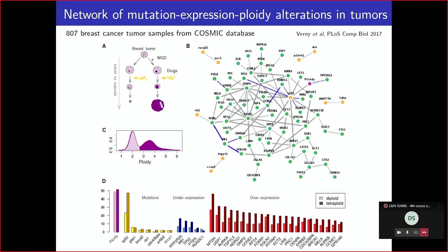The indirect effect of ploidy on expression is mediated through mutations in well-known genes like TP53. Unless TP53 is mutated, tetraploid cells have no way to develop a whole tumor — they must evade the ploidy checkpoint to grow tetraploid tumor cells. This illustrates how strong indirect effects can be recovered by this approach.